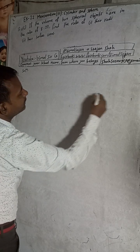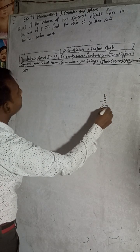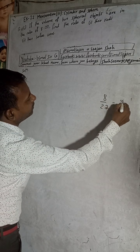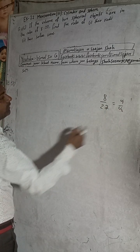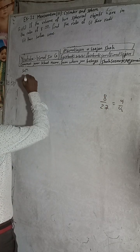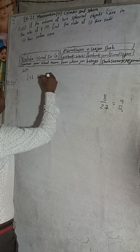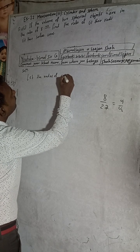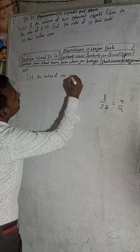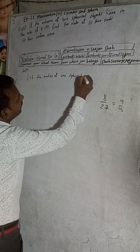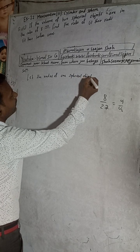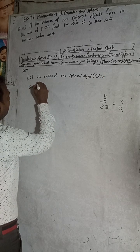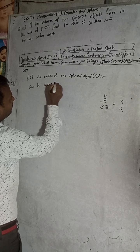8 is smaller and 27 is bigger, so that is V1 by V2. Volume of two spherical objects. Let the radius of the first spherical object — that is V1 — be R1, equal to R, and the radius of the second spherical object be R2.